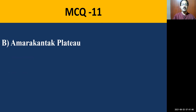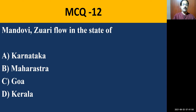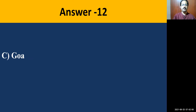MCQ number twelve: Mandovi and Zuari flow in the state of — the correct answer is Goa. River Mandovi and Zuari flow in the state of Goa.